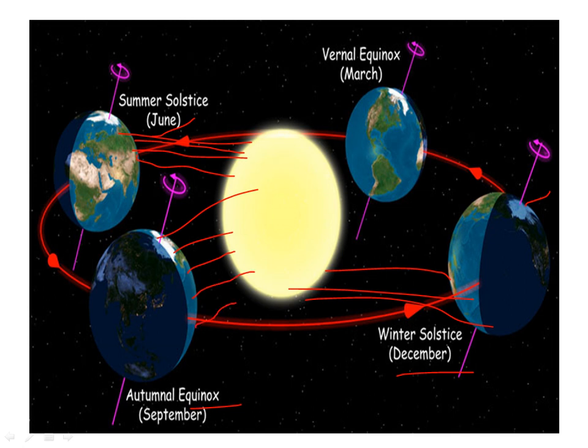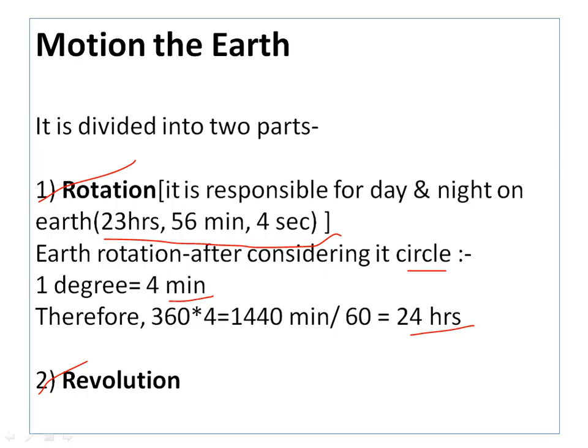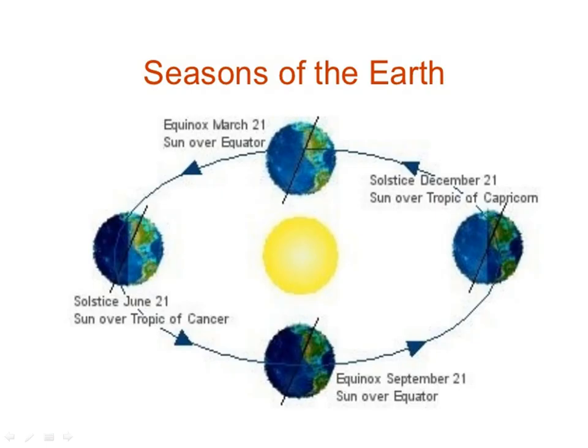So what happens here? Day and night are equal — this is the equinox. Here you can see: equinox March 21, sun over equator, sun rays are direct. This is the equinox condition.